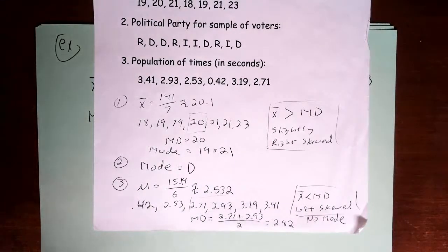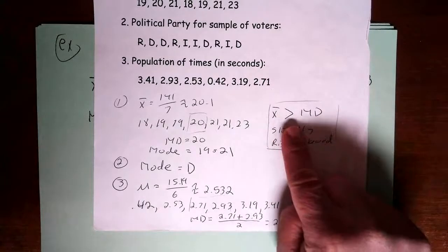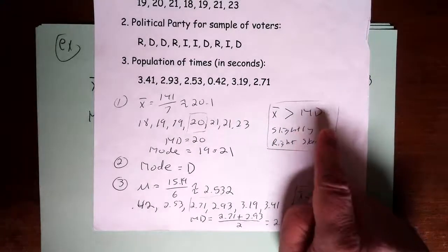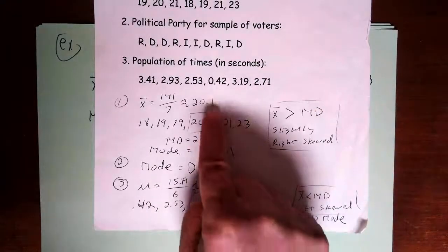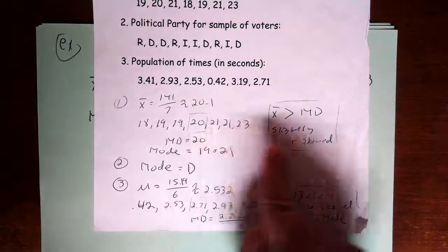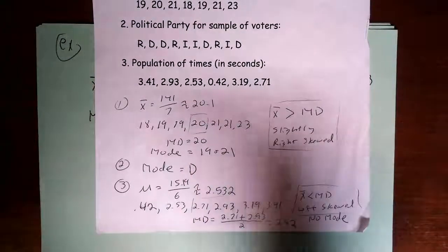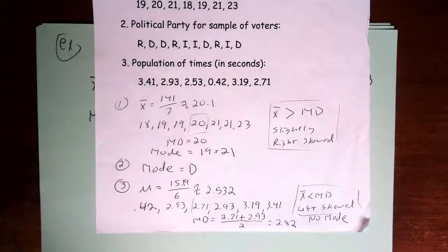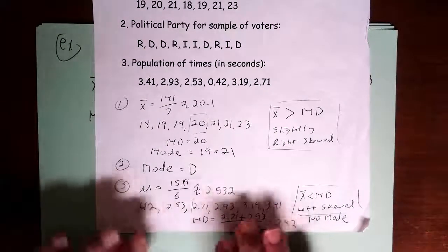So what about the shape of the data? Well, the mean is actually bigger than the median. Not much, very, very slightly, but it is a little bit, so it's very slightly right skewed.